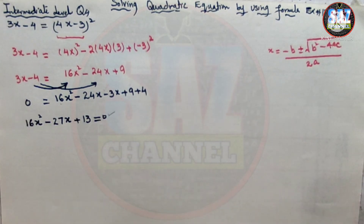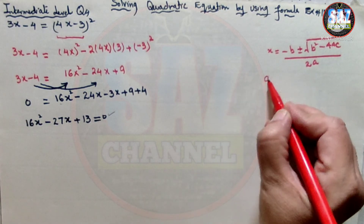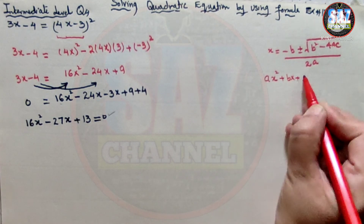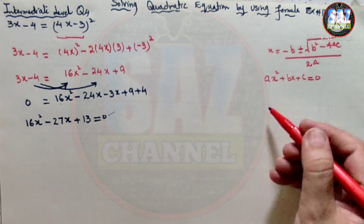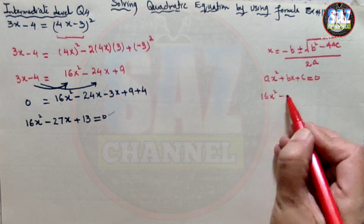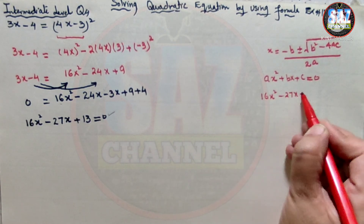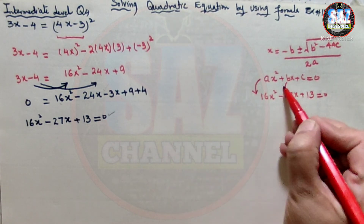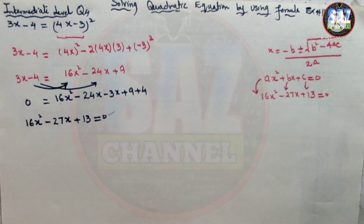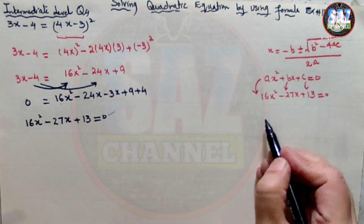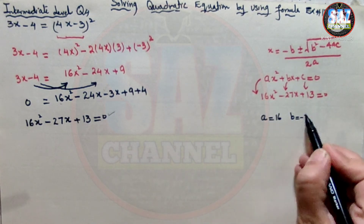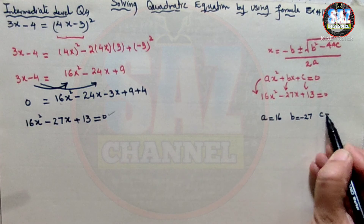My equation is in standard quadratic form. I compare it with ax squared plus bx plus c equals 0. Comparing 16x squared minus 27x plus 13 equals 0, we get: a equals 16, b equals minus 27, and c equals 13.